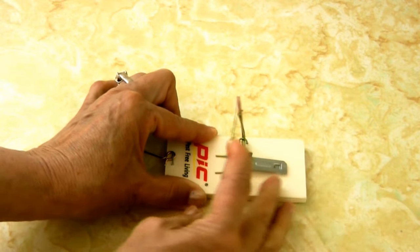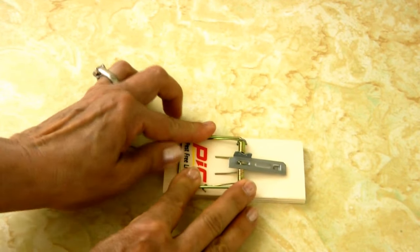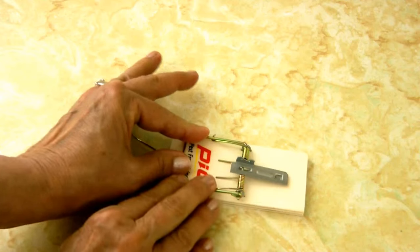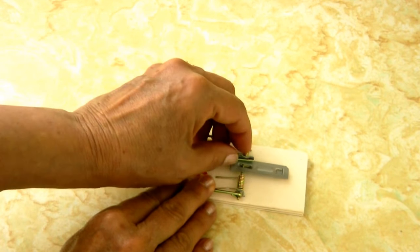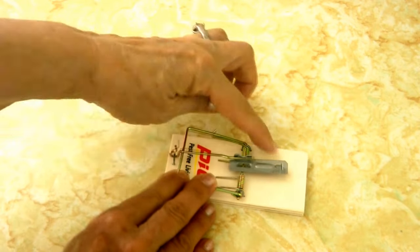Then you want to pull on the spring. Hold it carefully so you don't snap your fingers. Then take the set pin and fasten it on the little tiny notch that's on the bait mechanism.